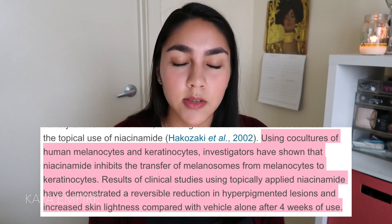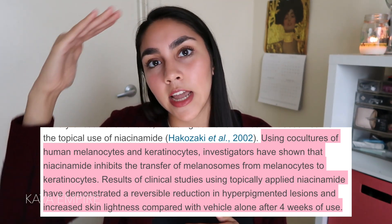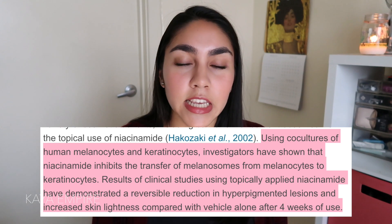The last ingredient is niacinamide, which actually doesn't inhibit tyrosinase. Instead, it inhibits a specific organelle inside melanocytes — the cells that produce melanin — and prevents the transfer of melanin to keratinocytes, which are the cells on the outermost layer of your skin. That's how it fades dark marks: instead of preventing melanin production, it prevents melanin from moving from your bottom skin cell layer to your top skin cell layer. The product I'm looking to try is The Ordinary's Niacinamide 10% and Zinc 1%. Niacinamide has a ton of other benefits too — I'll put that in the description.